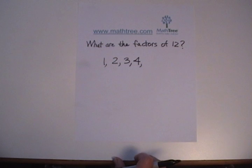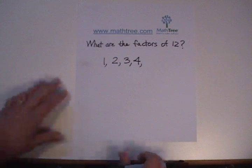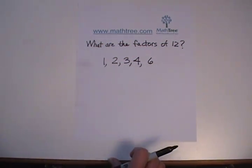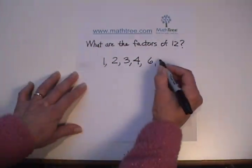And then they try 5, and this is where it breaks my heart. So they go 5, no, 5 doesn't go into 12, 6, oh yeah, 6 works, 7, no, 8, no, 9, no, 10, no, 11, no, oh yeah, 12, 12's a factor of itself.